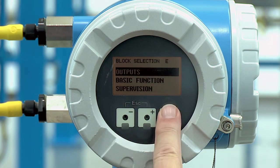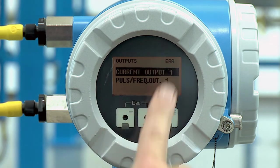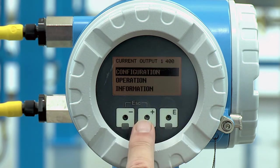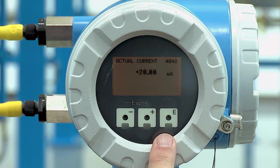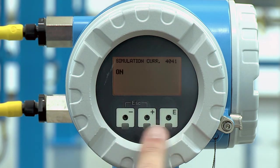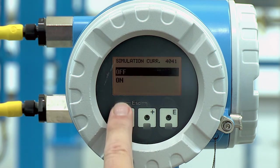Once again we want to go into current output, plus down to operation. It is showing we're outputting 20 milliamps. Let's go ahead and just turn the simulation off with the plus minus keys and enter.